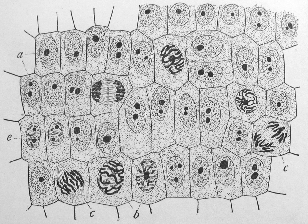Mitochondria and chloroplasts generate energy for the cell. Mitochondria are self-replicating organelles that occur in various numbers, shapes, and sizes in the cytoplasm of all eukaryotic cells. Respiration occurs in the cell mitochondria, which generate the cell's energy by oxidative phosphorylation, using oxygen to release energy stored in cellular nutrients to generate ATP. Mitochondria multiply by binary fission, like prokaryotes. Chloroplasts can only be found in plants and algae, and they capture the sun's energy to make carbohydrates through photosynthesis.